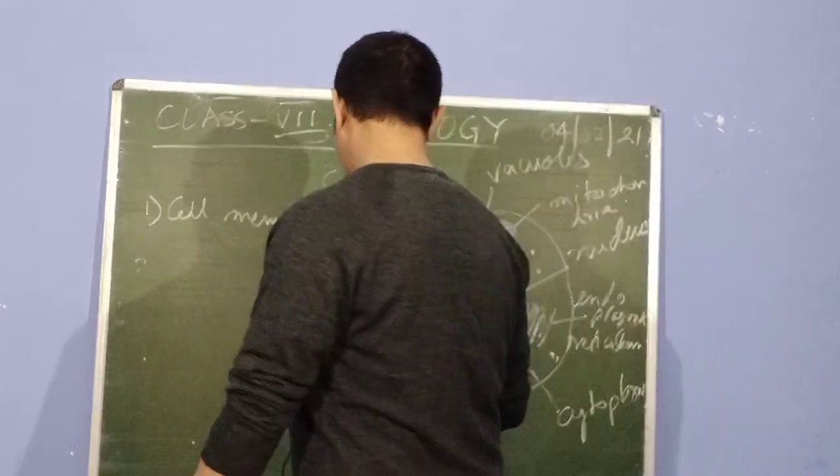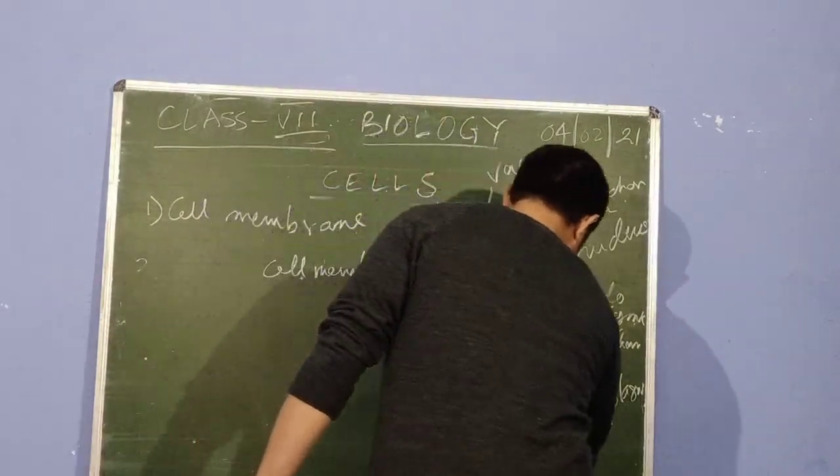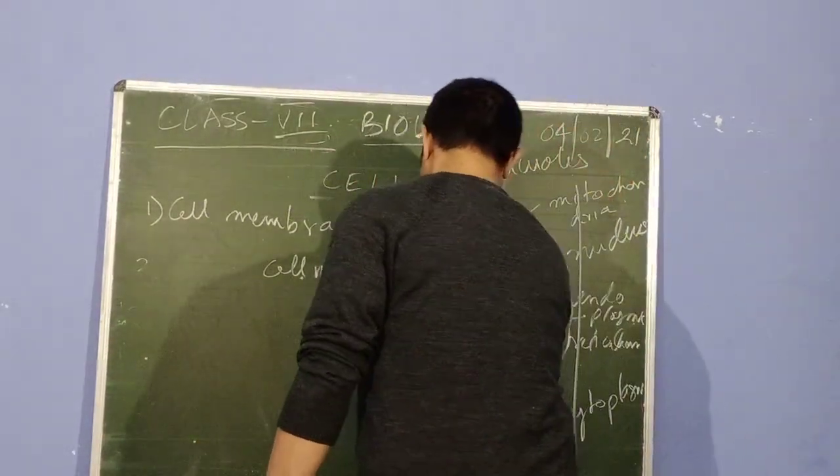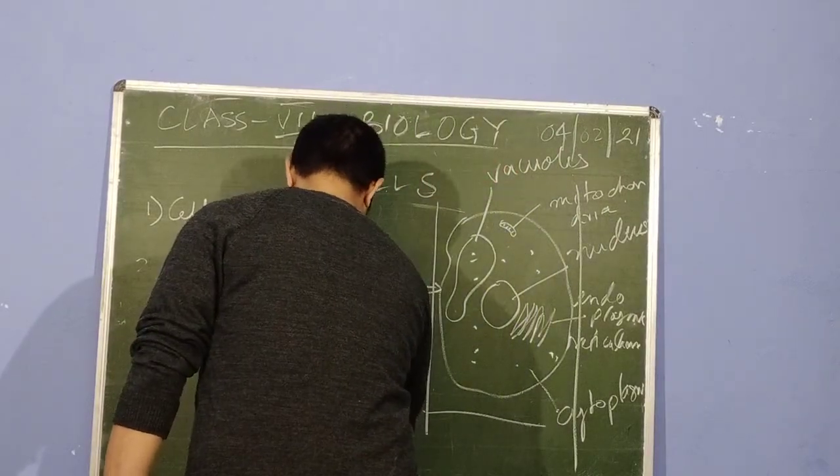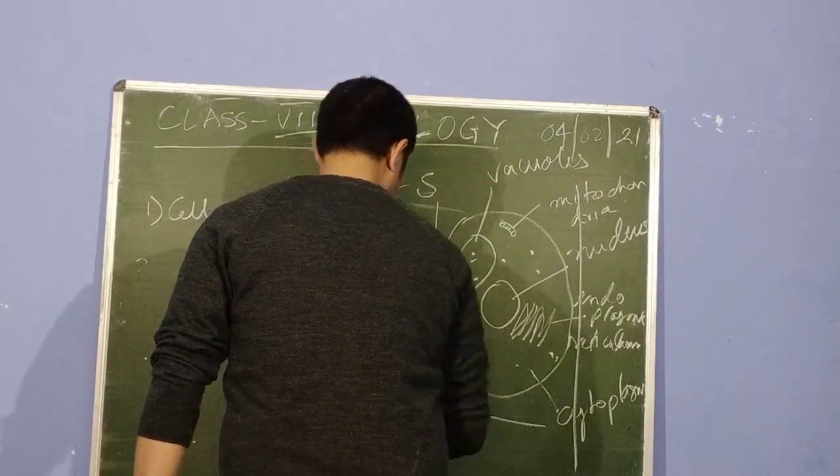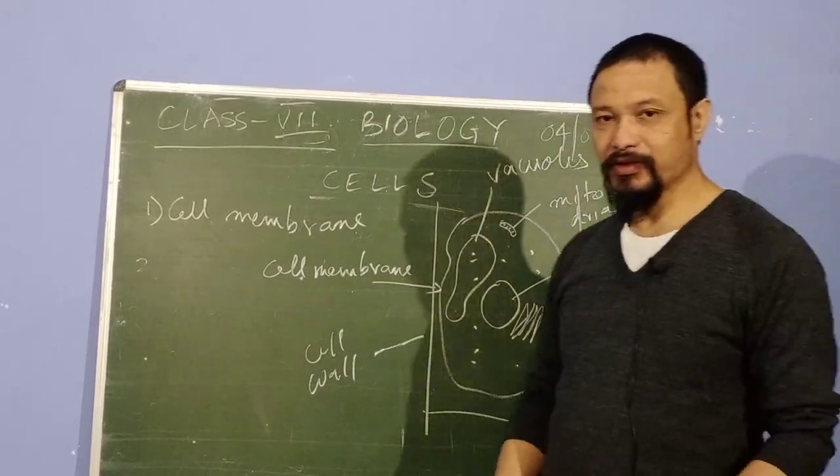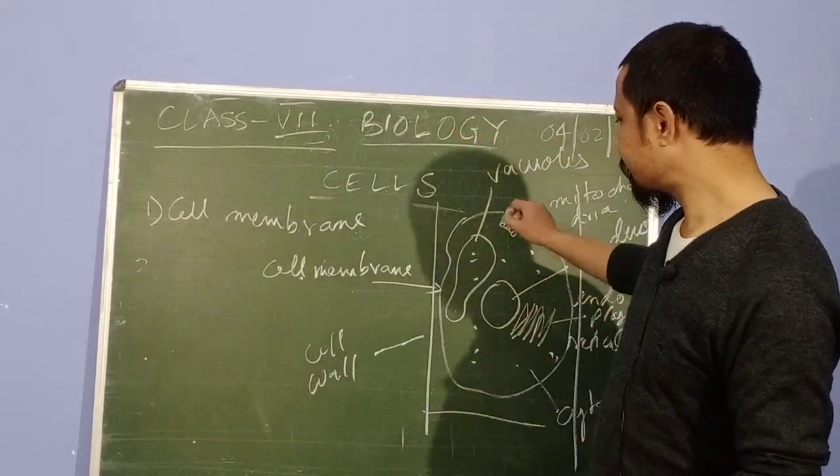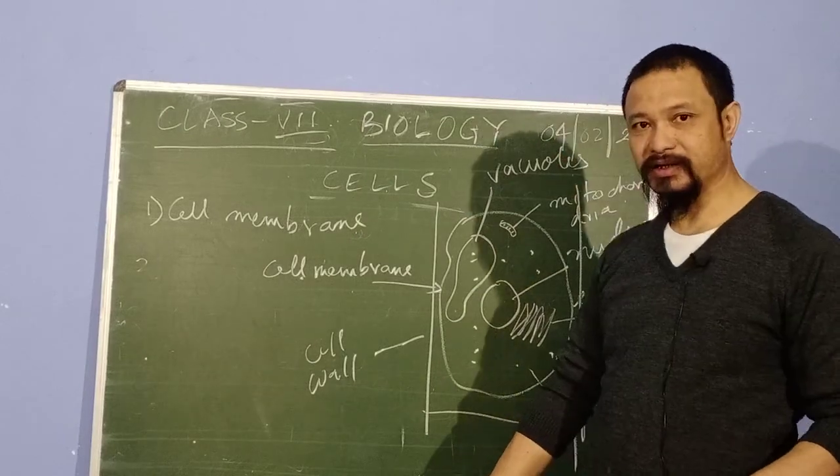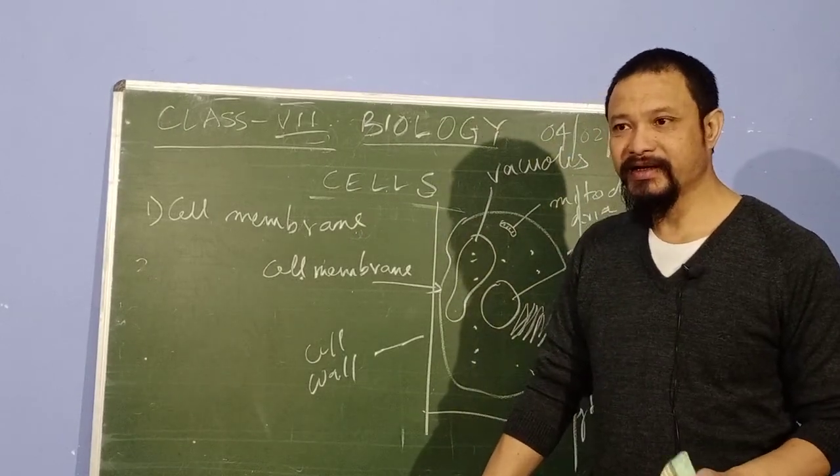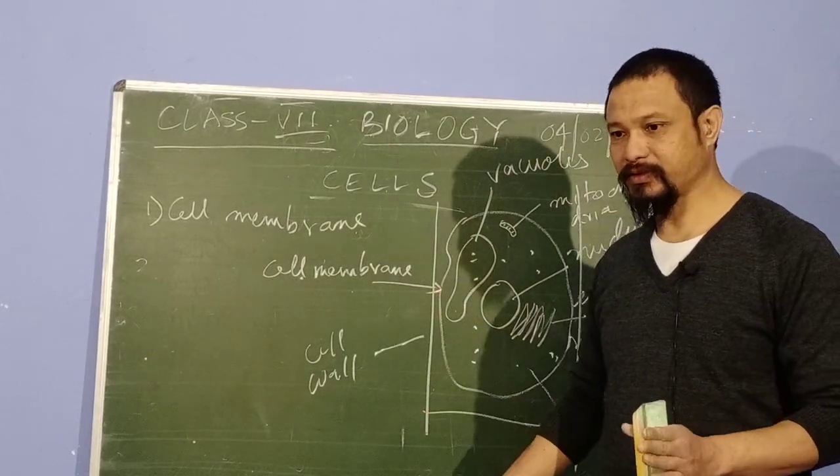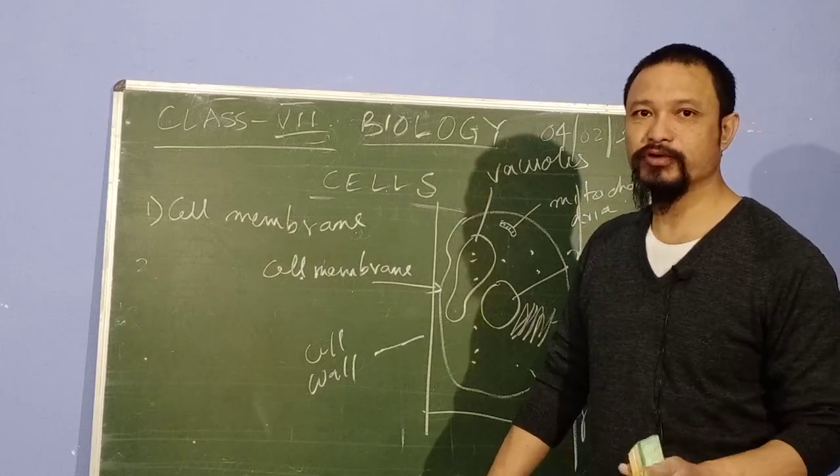In plant cells there is another structure called the cell wall. It is made of cellulose and cellulose is a dead structure. It is not a living thing. And it gives that turgidity. It gives that support to the cell. It makes the cell strong, gives support to the cell.